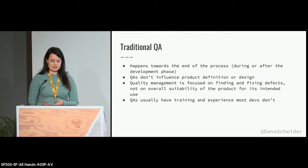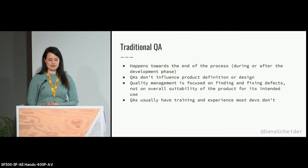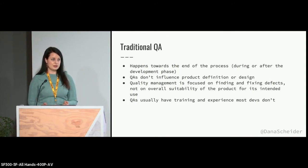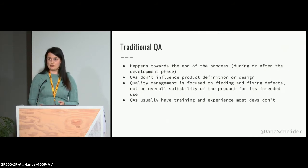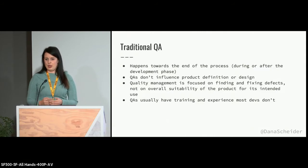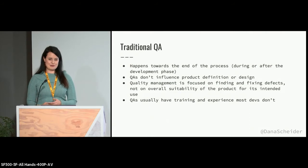Traditional QA is focused on finding and fixing defects, when to me it should be focused on overall suitability of the product for its intended use. What I will say about traditional QAs is that they usually have training and experience that most devs don't — it's actually its own skill set. So in order to adopt TQM, that's something that devs have to be trained in somewhat, learning to figure out how to break things and be creative about what's not going to work.